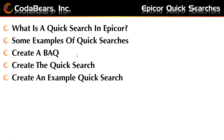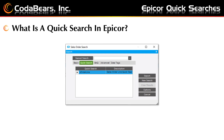What is a quick search in Epicor? A quick search is derived from a Business Activity Query, or BAQ, and quick searches can be used for yourself or you can share them for everyone to use. A quick search can have input criteria that is specific to you or your company and can help you use searching more efficiently. A quick search can be set as the default search and can be added to the right-click context options.